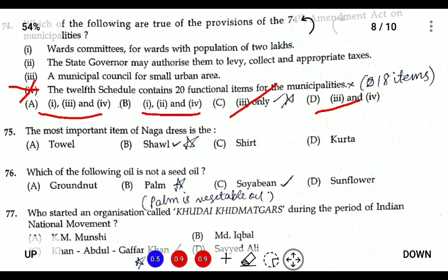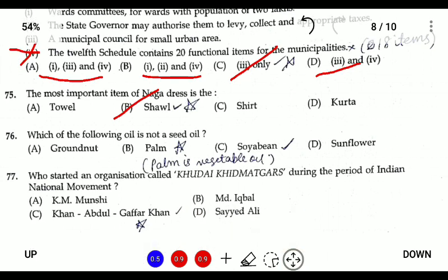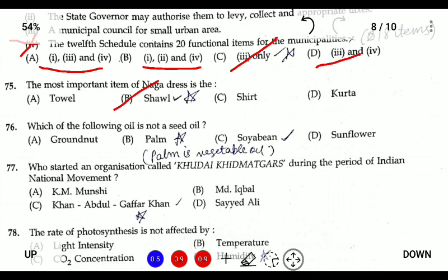Question seventy-five: the most important item of Naga dress is the shawl. Question seventy-six: which of the following is not an oil seed? Palm is not an oil seed because palm oil is a vegetable oil — rays are all obtained from seeds.